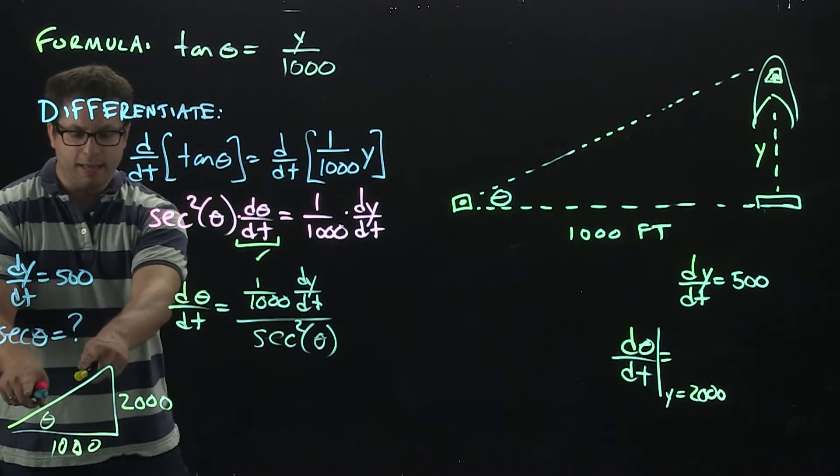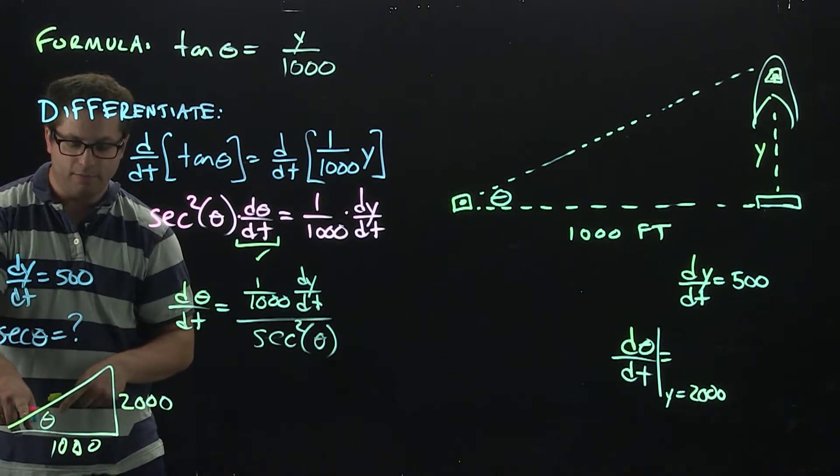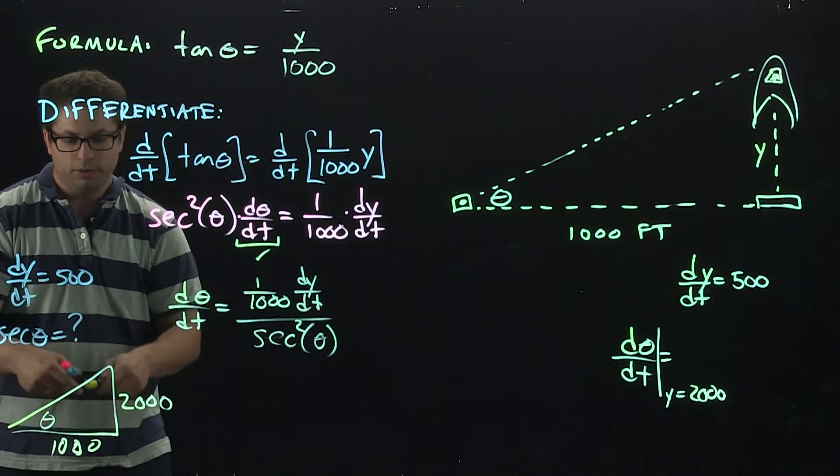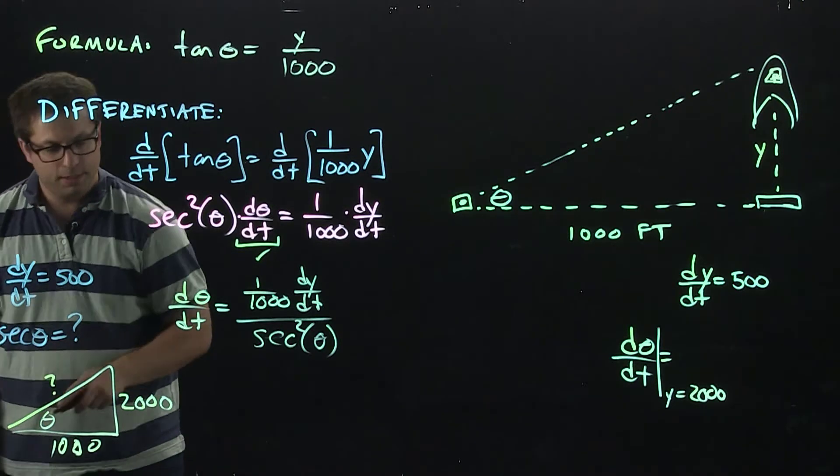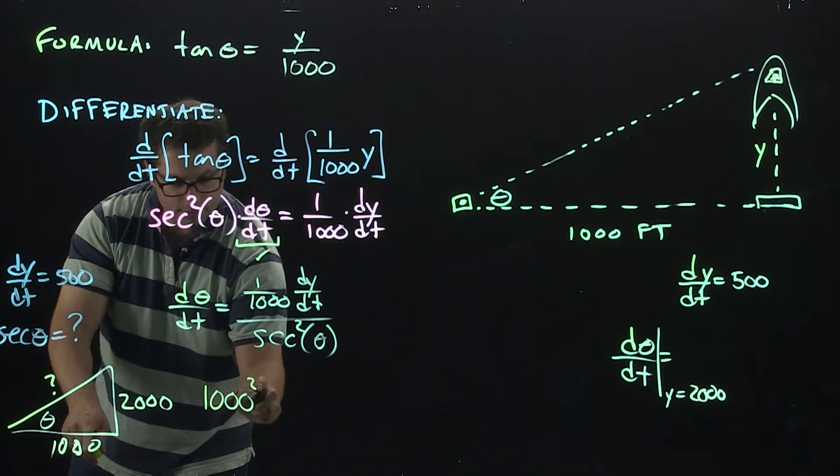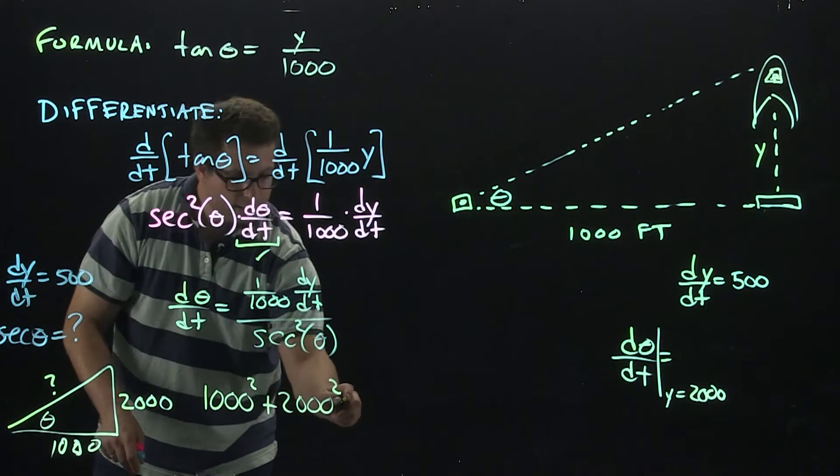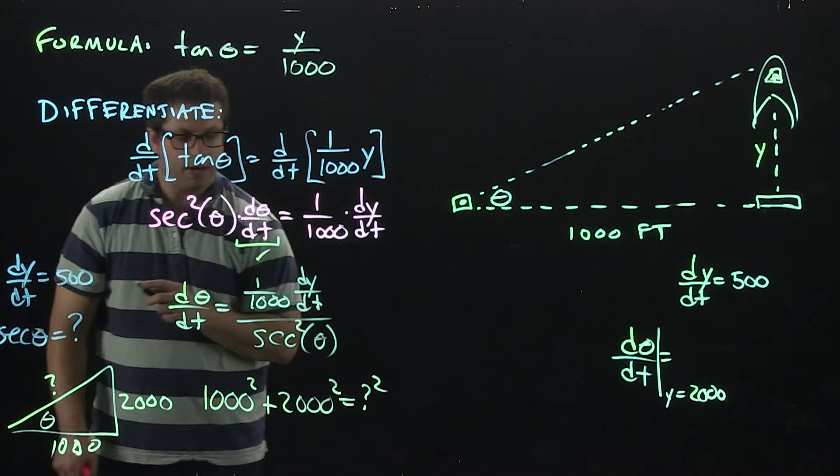If we can complete the triangle and get the hypotenuse, then we're going to be able to do secant theta because now we'll have all the sides of the triangle. To get this right here, it's going to be the 1,000 squared plus the 2,000 squared, this Pythagorean theorem is going to be the hypotenuse squared.